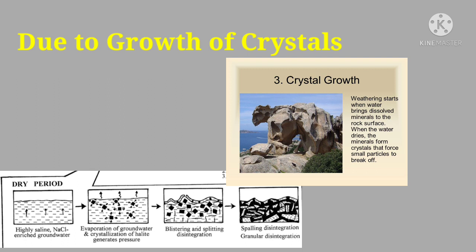The second type of granular disintegration is due to crystal growth. In porous rocks with numerous microscopic holes, water rises into cavities due to capillary action. If this water contains dissolved salt, when the water evaporates the salt forms tiny crystals in the porous surface. These crystals grow larger through repetition of the process and exert pressure on adjoining rock particles, which are then separated from the rock due to excessive pressure.